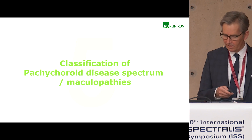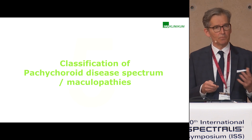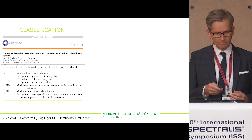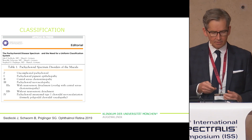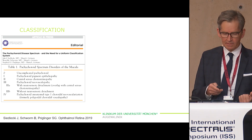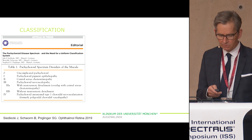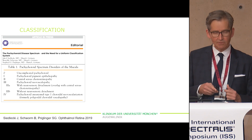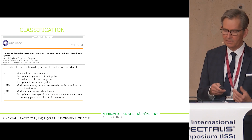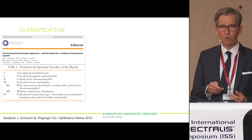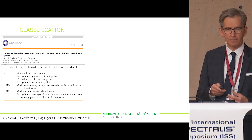To better illustrate this relationship, we have proposed the following classification: Stage one — Pachychoroid pigment epitheliopathy; Stage two — central serous choroidopathy; Stage three — Pachychoroid neovasculopathy; and Stage four — PCV, Pachychoroid choroidal vasculopathy.